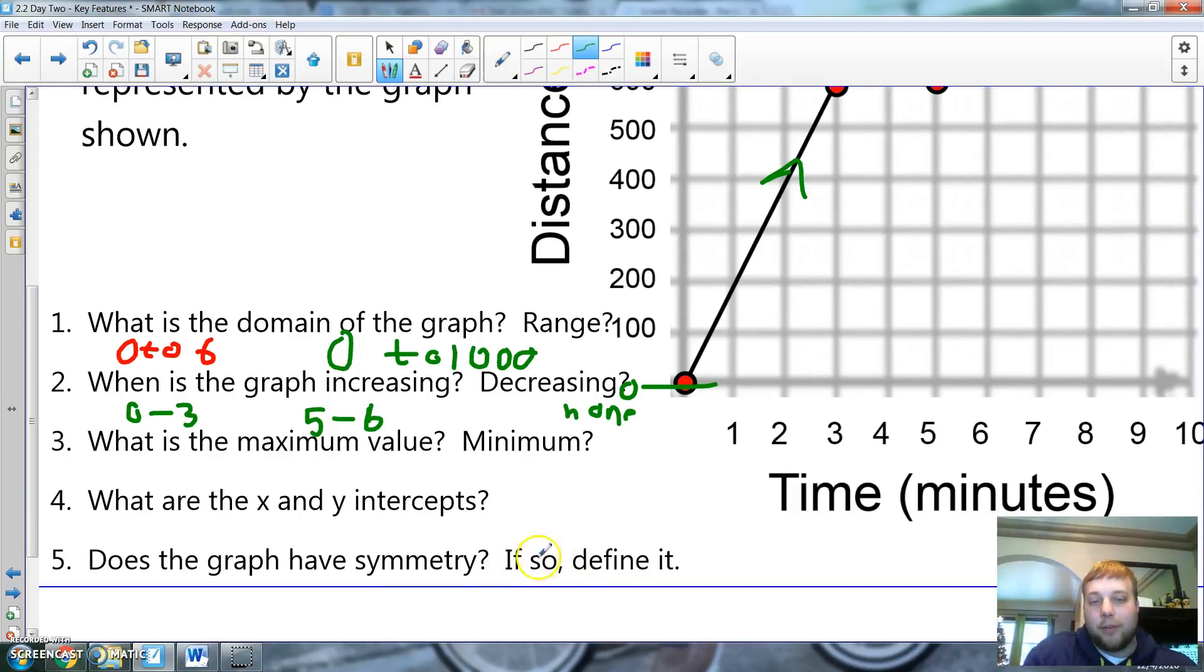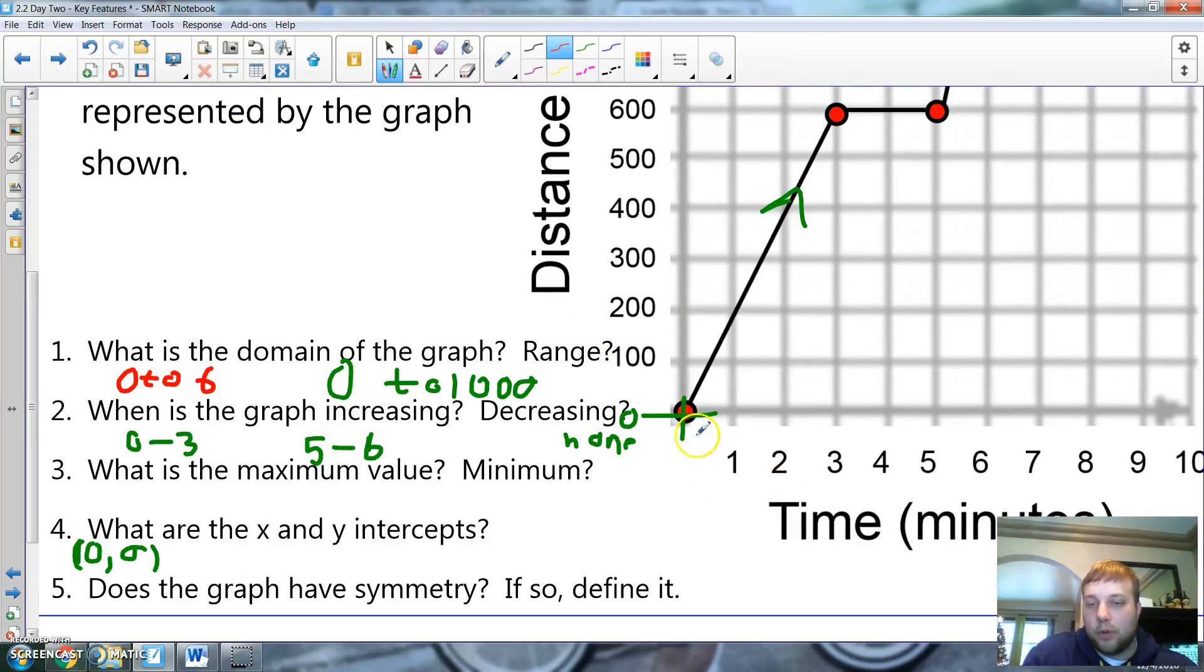What are the x and y intercepts? So, my x intercept. Where does it cross my x? And I cross my x is at zero. But, in fact, it's going to be at zero, comma, zero is my x. And my y intercept. Where does it cross my y? Well, it crosses my y at the same place. Zero, comma, zero. That is also my y intercept.